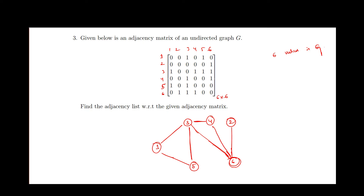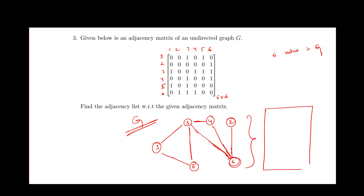So we got all the edges, and this is the complete graph G. Now from this graph, we can write the adjacency list. The adjacency list gives the vertices which are adjacent to each vertex.